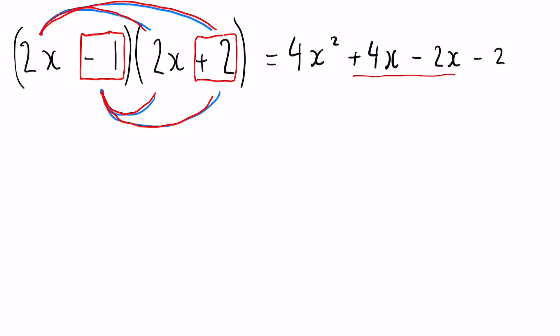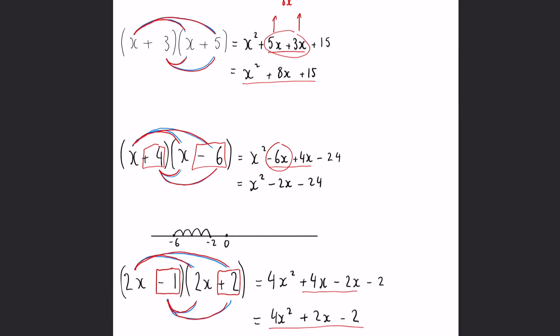If you haven't guessed already, we need to simplify that last one. The four X squared is going to stay the same, plus four X minus two X. We start with a positive four and we want to take away two—simply going to be two X minus two. That is our final answer.